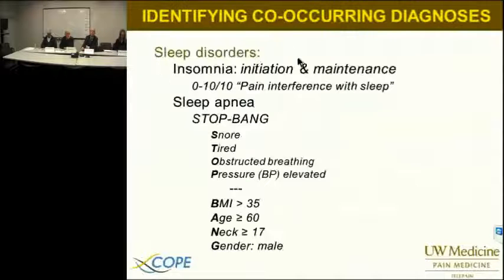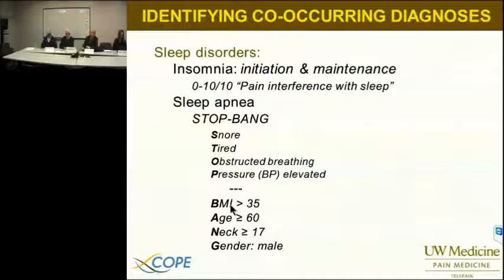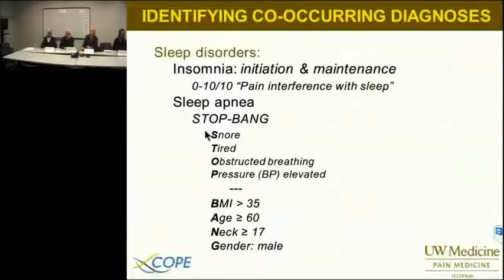Sleep disorders are a very important co-occurring diagnosis. We consider it critical at the University of Washington to identify pain initiation problems and pain interference with sleep maintenance problems. We do a zero-to-10 survey of pain interference with sleep, and we assess the co-occurring condition of obstructive sleep apnea — not central, but obstructive sleep apnea — using the STOP-BANG: snore, tired, obstructive breathing, elevated blood pressure, obesity, age above 60, neck collar size in men above 17 inches, and male gender. Just the STOP alone will allow you to identify obstructive sleep apnea. Central sleep apnea requires a sleep study to make the diagnosis and would be a significant consideration in any high-risk patient.